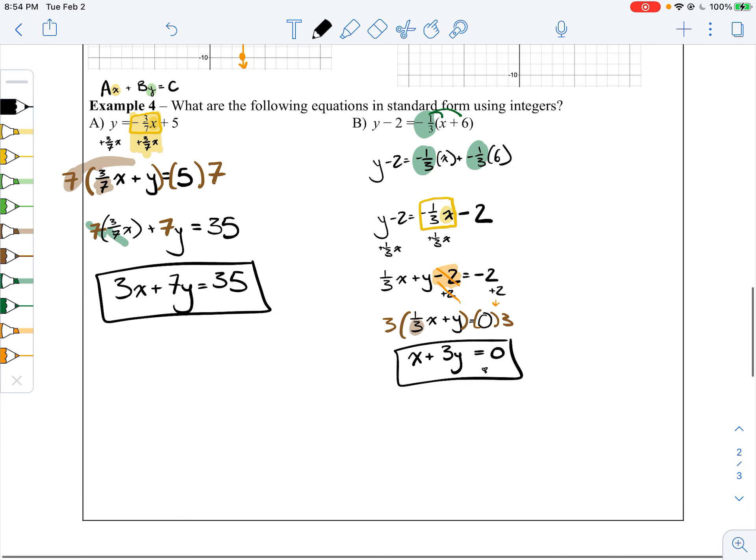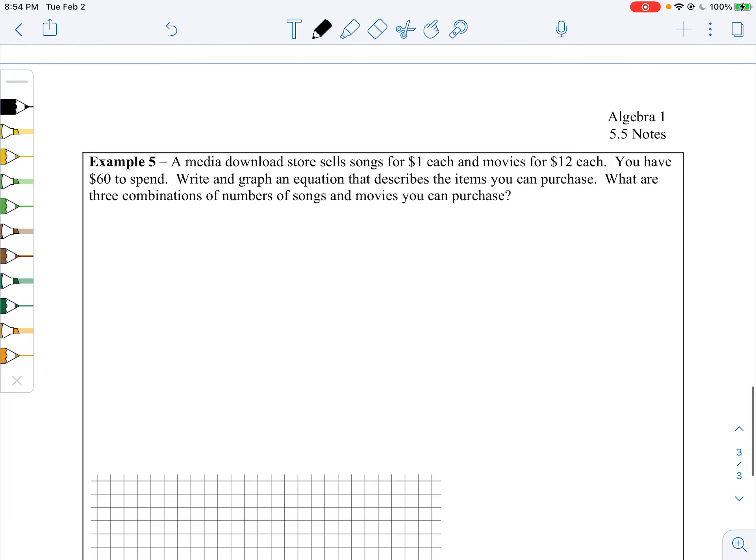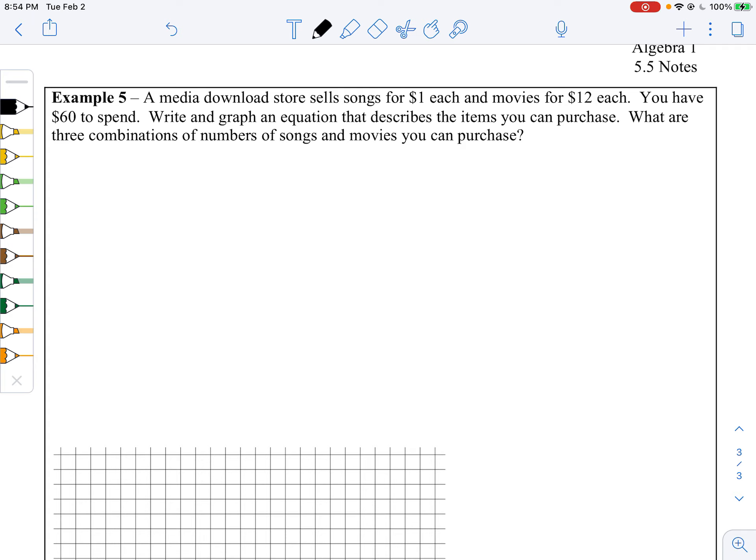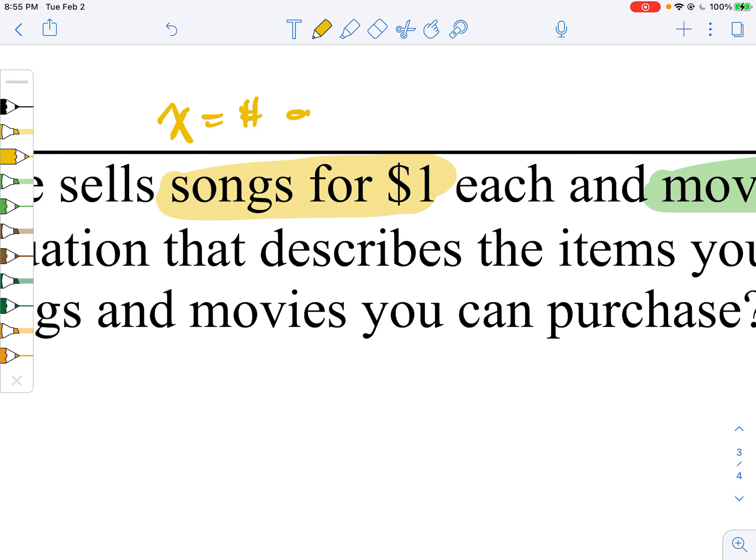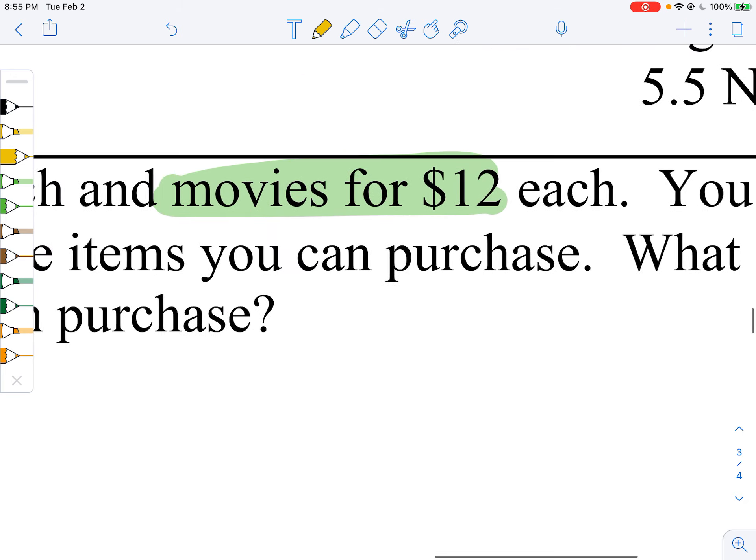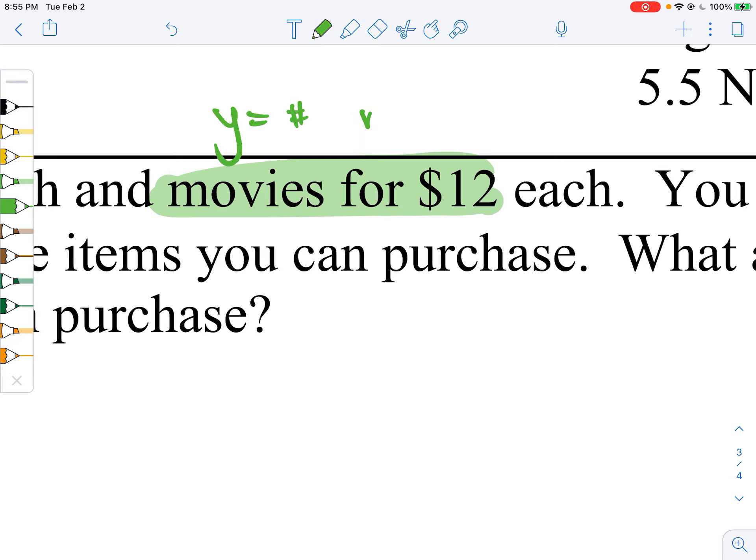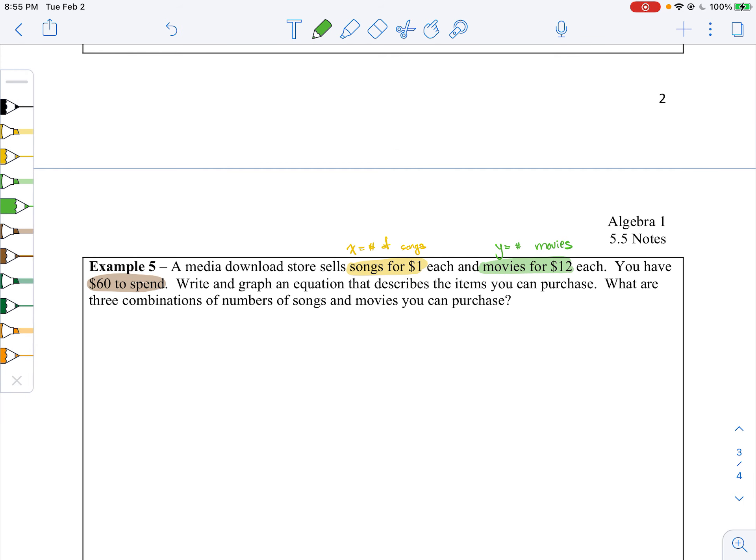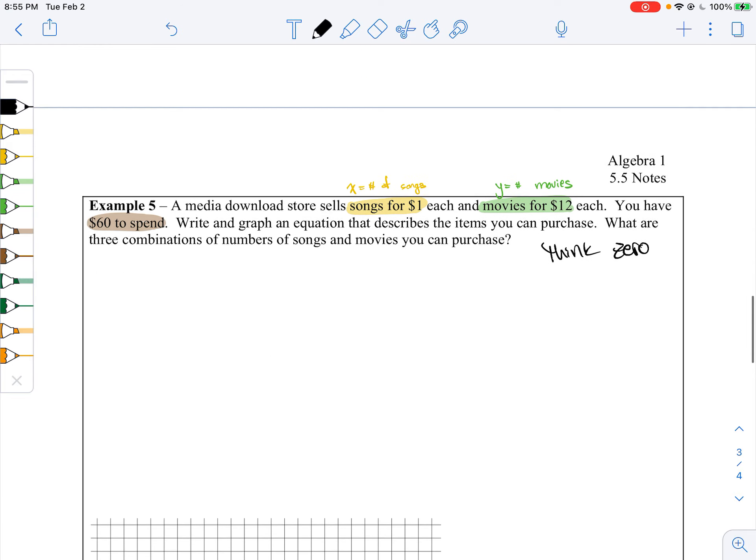We've got one more. And this is why standard form is super helpful for word problems like this guy. So let's say you're downloading songs and movies and stuff. The songs are $1 each and the movies are $12 each. You have $60 total to spend. Write and graph an equation that describes the items you can purchase. What are three different combinations of songs and movies that you can purchase? Let's let x be our number of songs and let's let y be our number of movies.